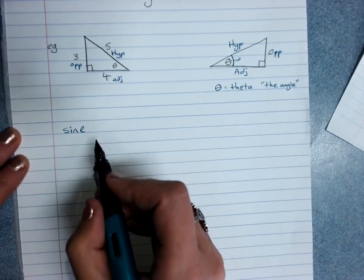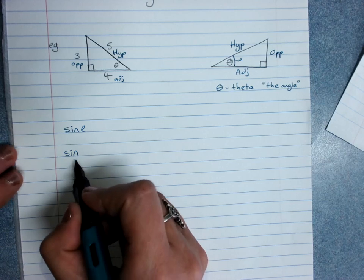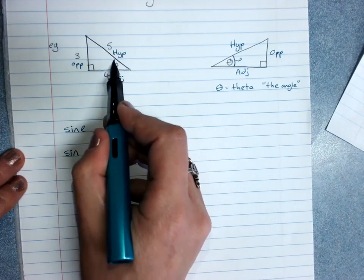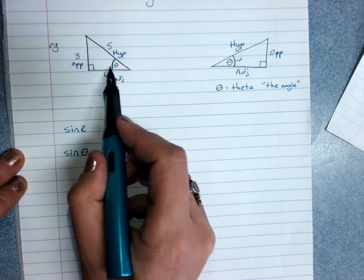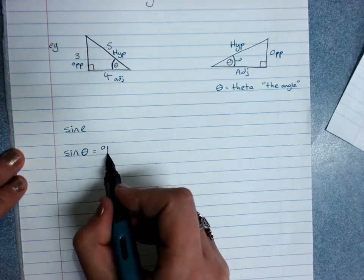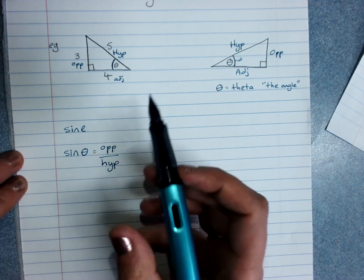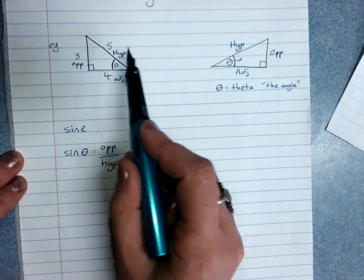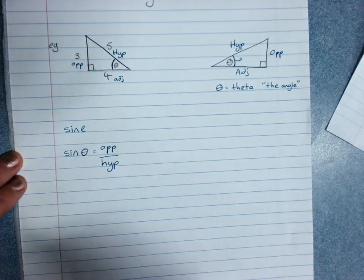They're called sine, the first one, abbreviated to sin, S-I-N. And we always say sine of the angle, sine theta, because it's the opposite of that angle over the hypotenuse. And this is just saying when we've got the opposite and the hypotenuse involved, that relationship will just call it sine.